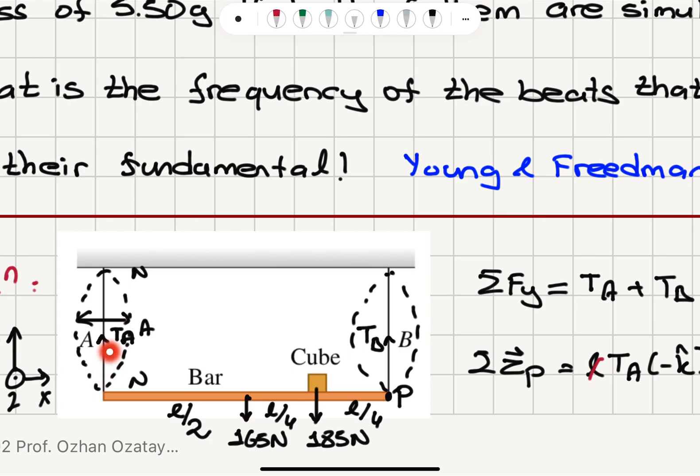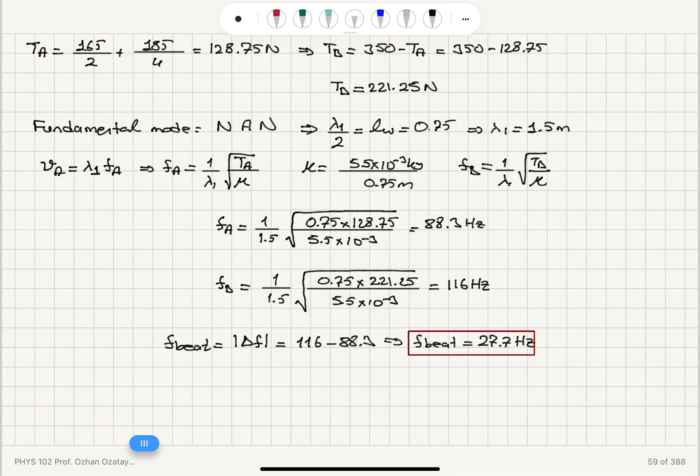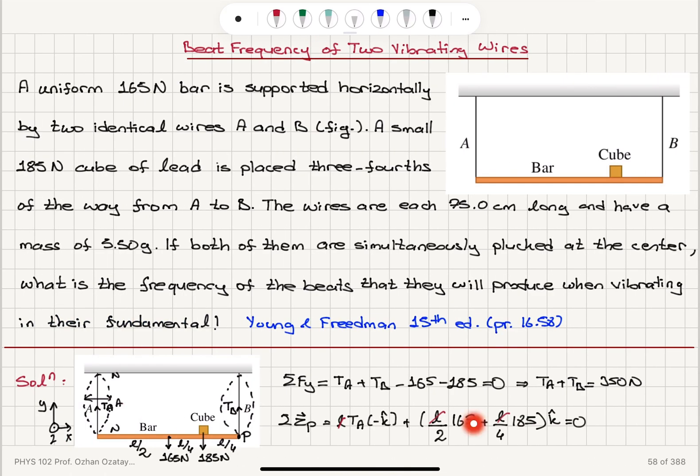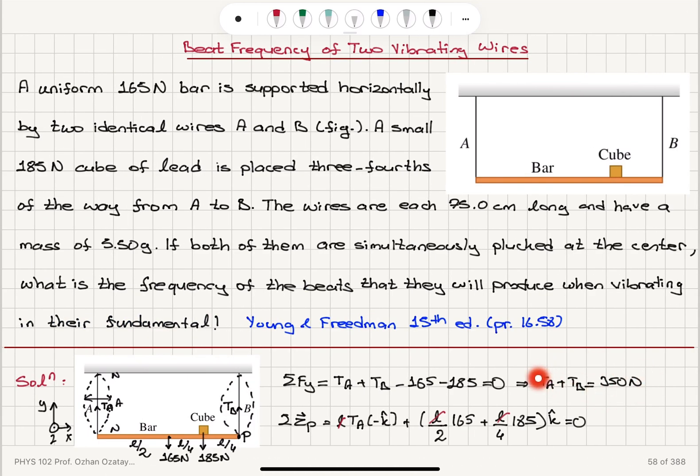the torque due to tension A is L times T_A in minus k hat direction. The torque due to 165 newtons is L over 2, 165 in plus k hat and L over 4, 185 plus k hat. The torque should add up to zero because we have equilibrium. And this gives us for the tension 165 over 2 plus 185 over 4.